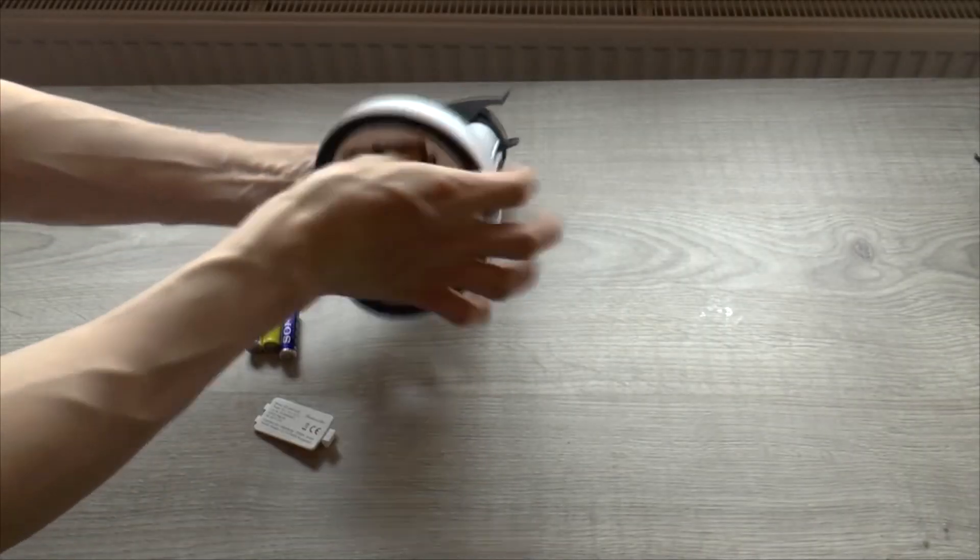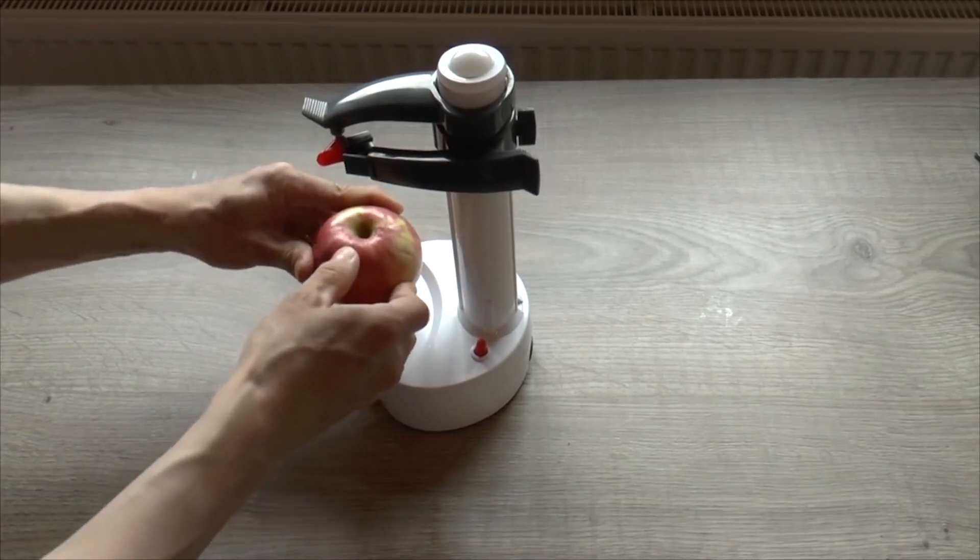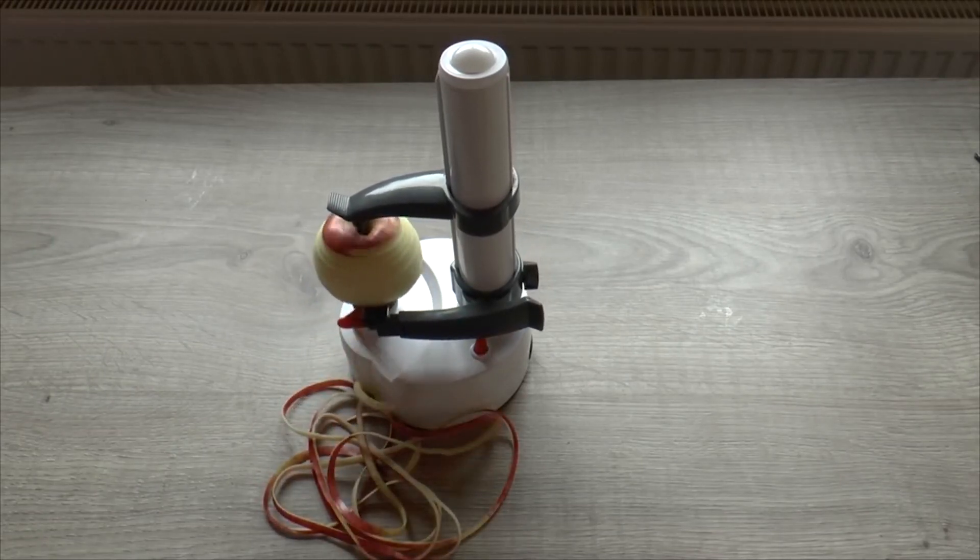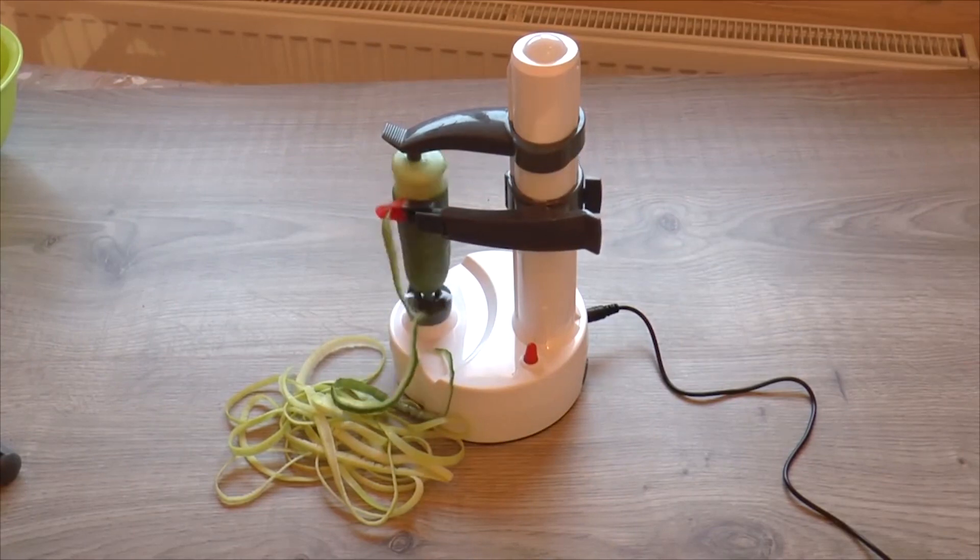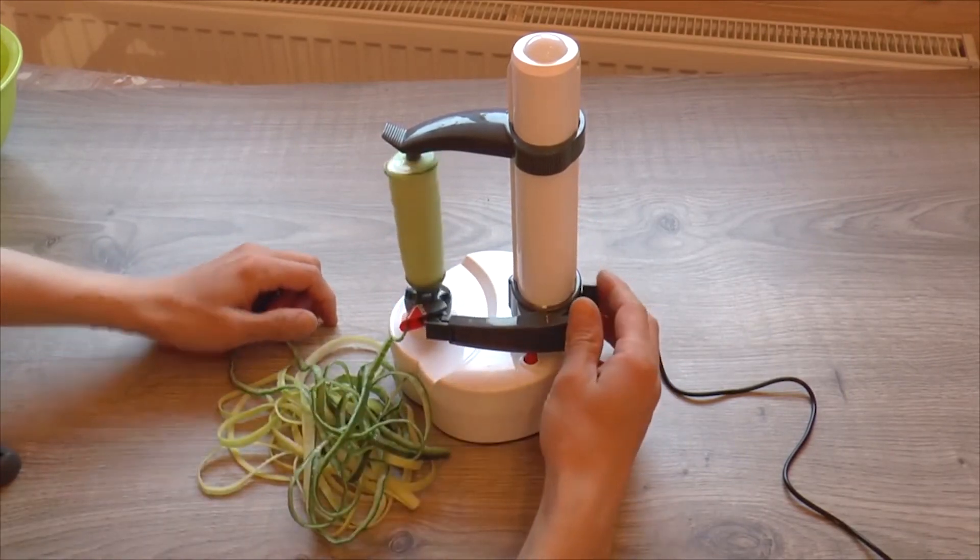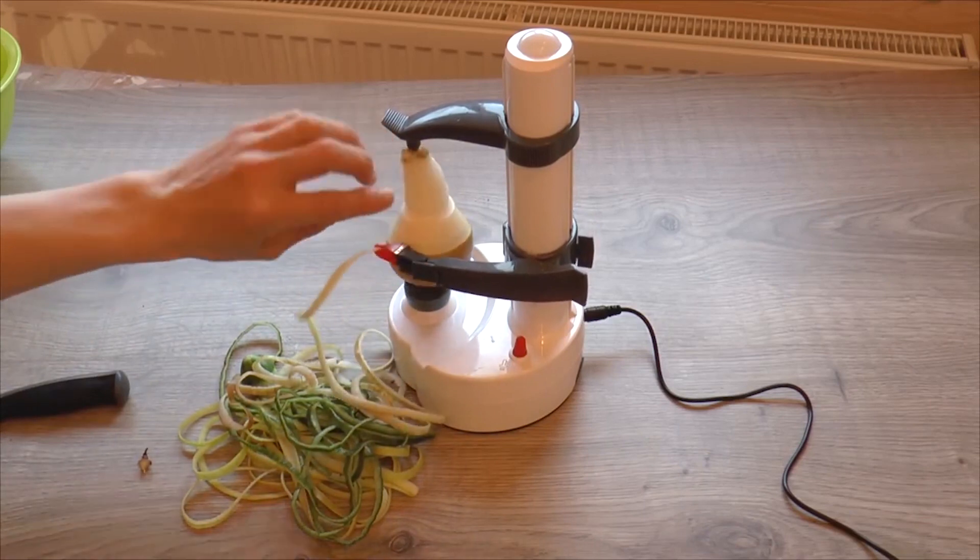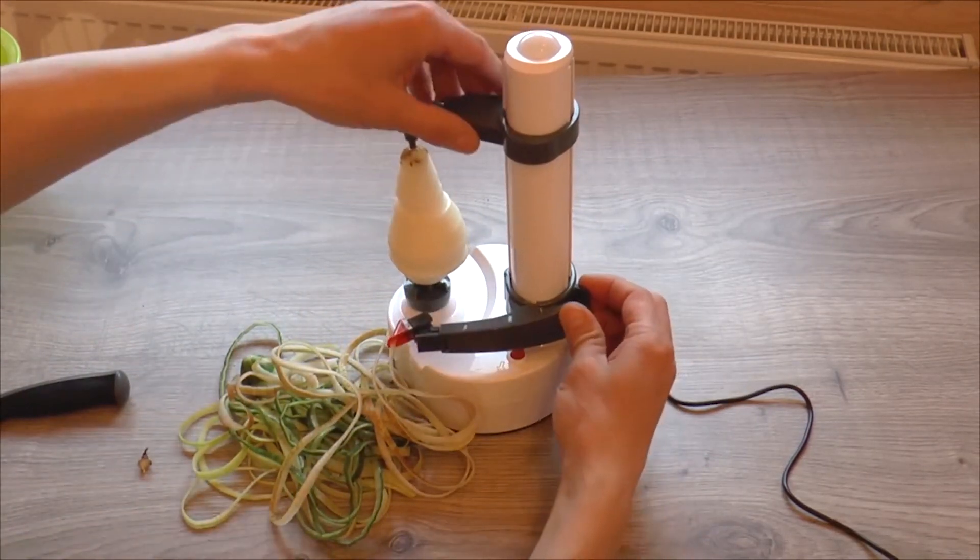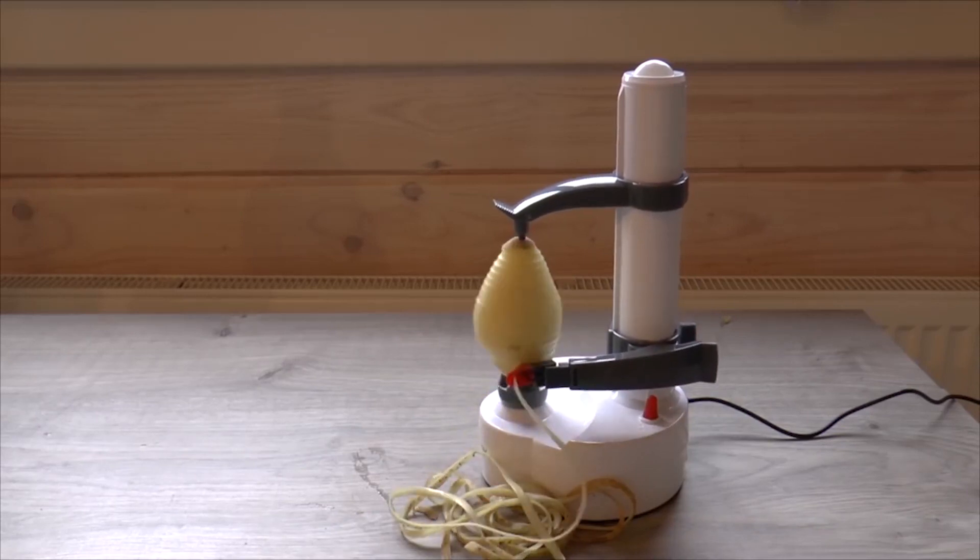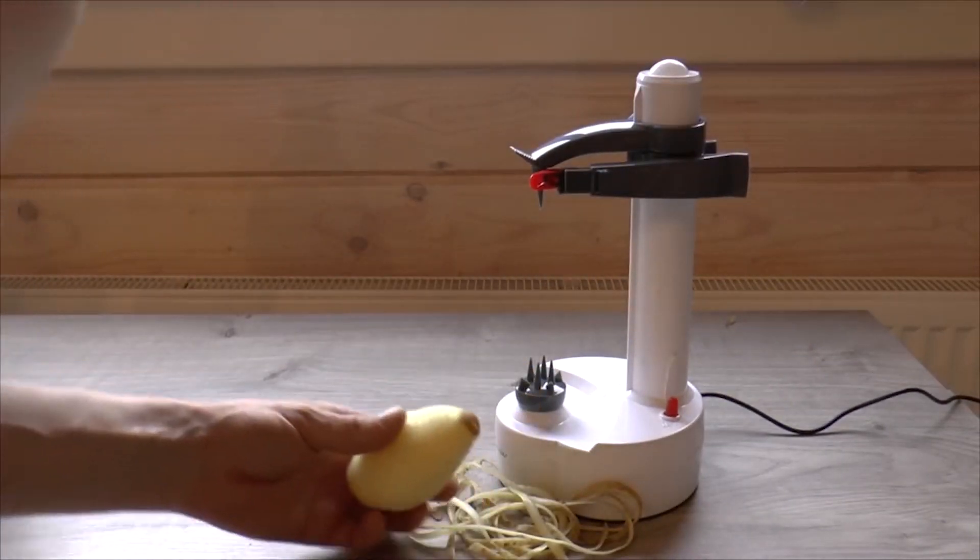For those who hate to peel vegetables, check out this automatic vegetable peeler, which works great with apples, cucumbers, peaches, and potatoes. As you can see, the results are fascinating!